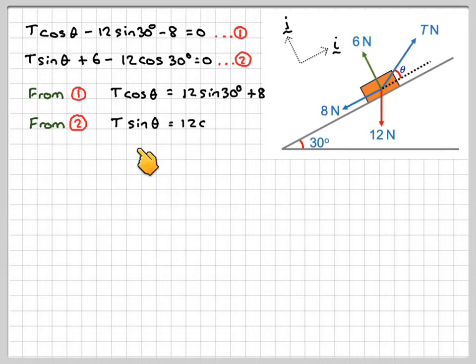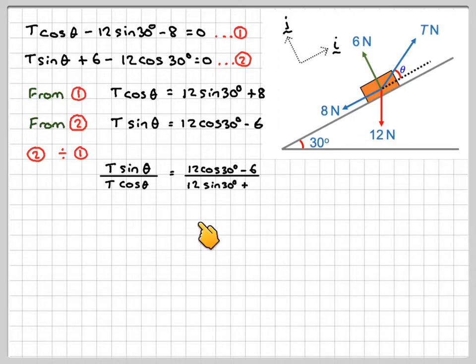we can say that T sine theta is equal to 12 cos 30 minus 6. And then if we did 2 divided by 1, do that because we've got sine will be sine over cos, which is easy to deal with. So we're going to have T sine theta over T cos theta. And then here we're going to have 12 cos 30 minus 6 over 12 sine 30 plus 8.